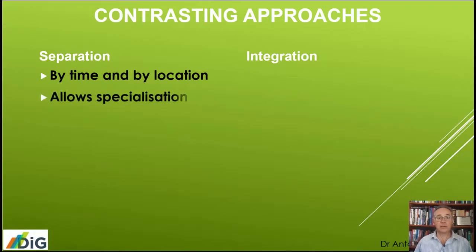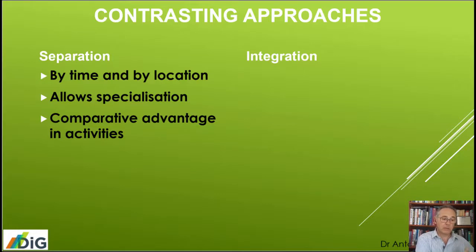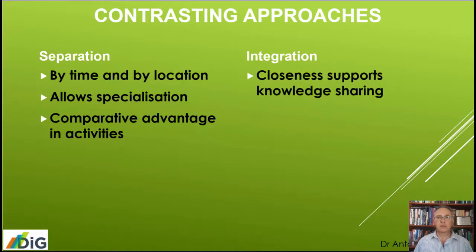This allows specialization in what the particular units are good at and the business models they're good at. It can bring out a comparative advantage in various activities — one type of business might be particularly good in one approach and the other one relatively good elsewhere. The law of comparative advantage. On the other hand, the integration approach can be useful where closeness can support knowledge sharing and the creation of synergies across units.